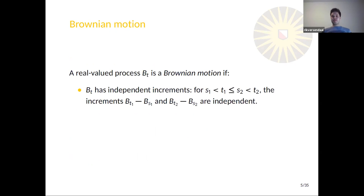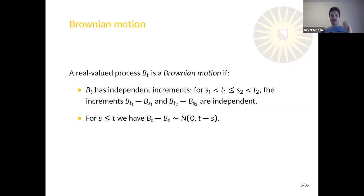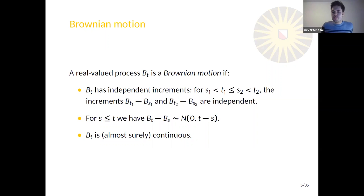The standard way of defining Brownian motion is that it is a process that has independent increments, which means that if I take two disjoint time intervals and I look at the jump Brownian motion makes across each interval, those two jumps are independent of one another. Furthermore, we also know the distribution of such increments: if we have the increment over a time interval of length T minus S, then this has a normal distribution with mean zero and variance T minus S. Finally, we want the trajectories to be continuous.